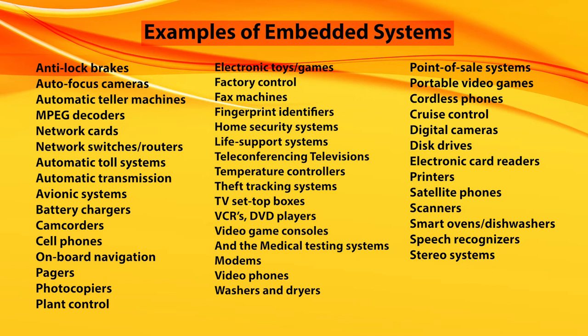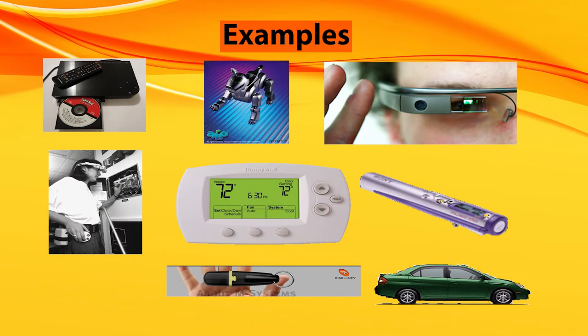You can see a long list on the slide. All these kinds of devices come with embedded systems — like Sony players, Blu-ray players, cars, Google glasses, and even automatic thermostats. There are several examples of inbuilt embedded systems.